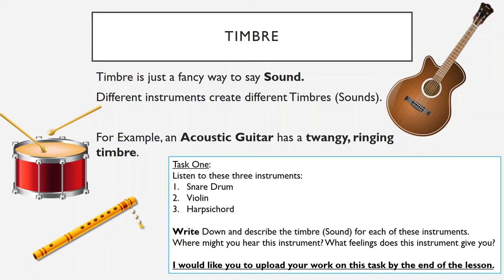For your first task I'd like you to listen to three instruments: one, a snare drum; two, a violin; and three, a harpsichord. As you listen to them, write down and describe the timbre — the sound — of each of these instruments, and try to describe them like I did with the guitar. Also consider where you might hear these instruments and what feelings each instrument gives you. Links to the instruments are below in the notes section of this PowerPoint.